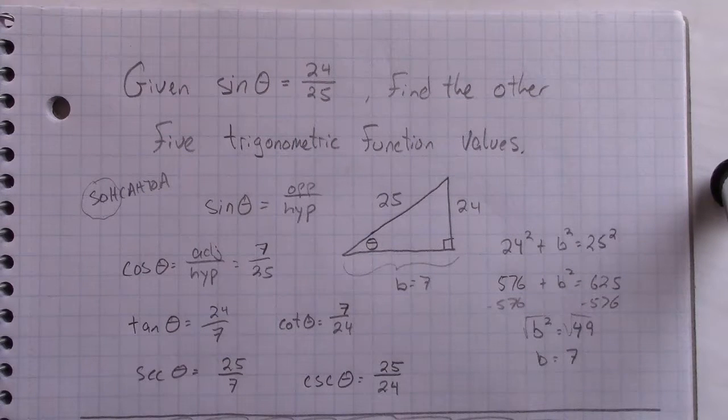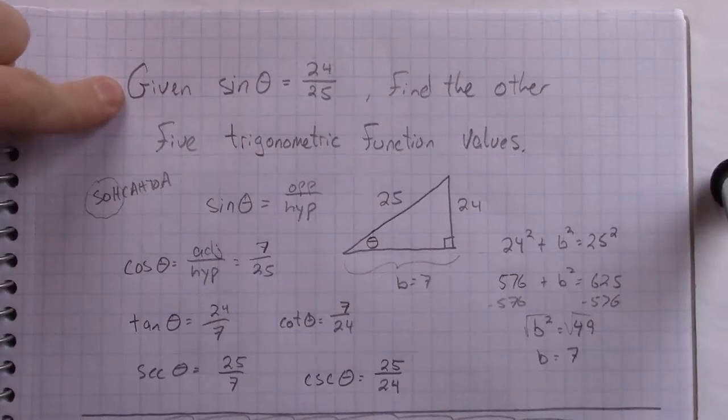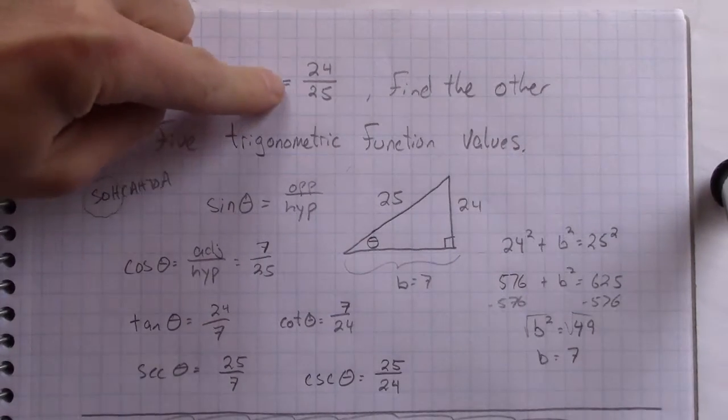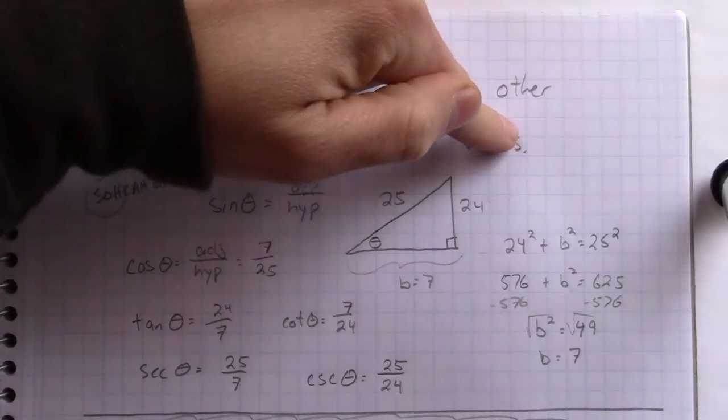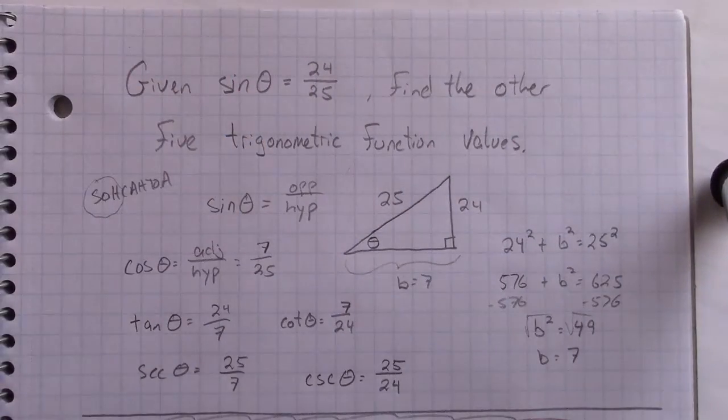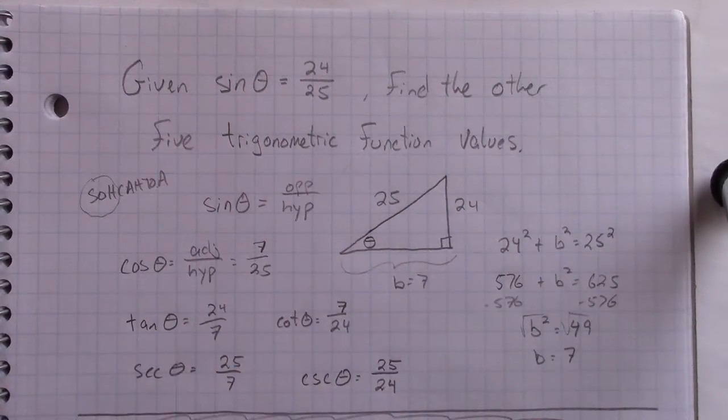One of the things I find fascinating is looking through different textbooks, specifically precalculus textbooks, since I'm teaching that class right now. In one textbook, I saw this question: given sine of theta equals 24 over 25, find the other five trigonometric function values. And I've got a method for doing that, and it makes sense, and if you check the back of the book, it works.